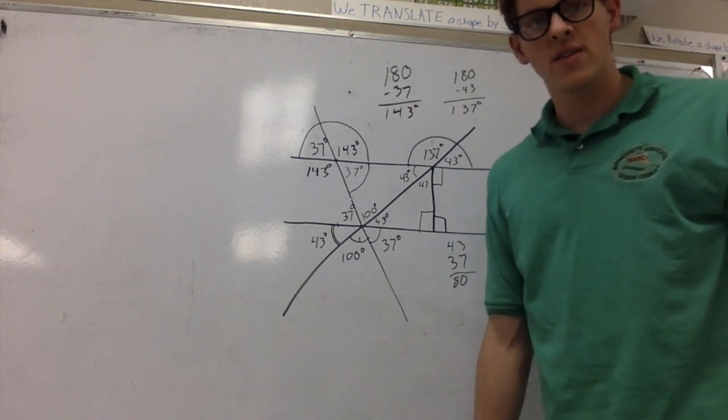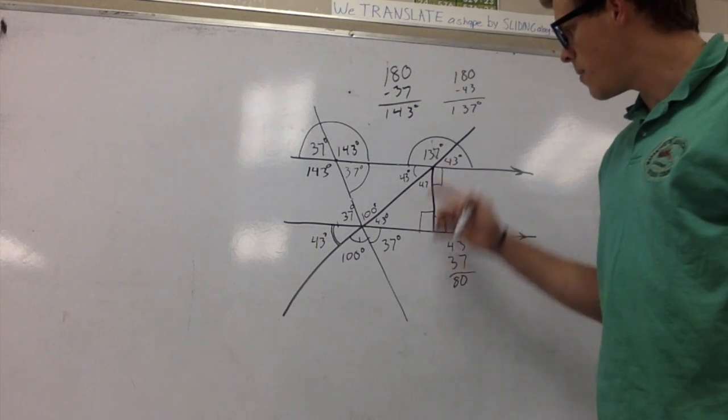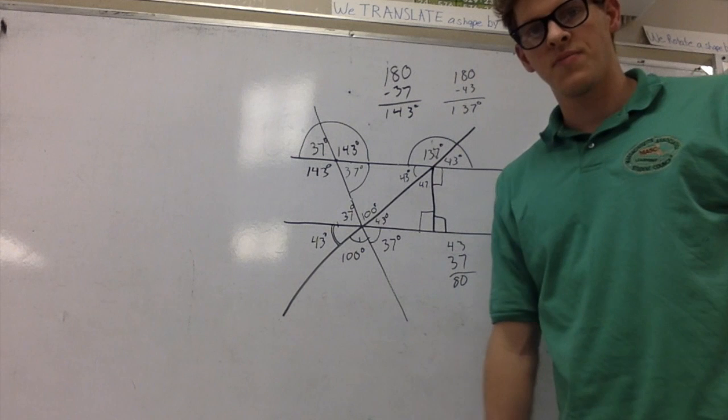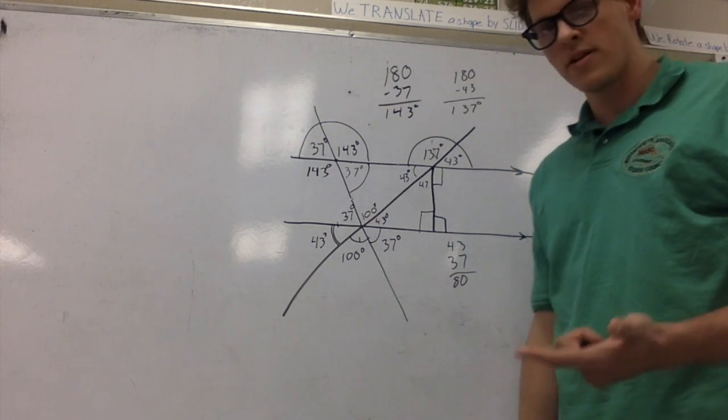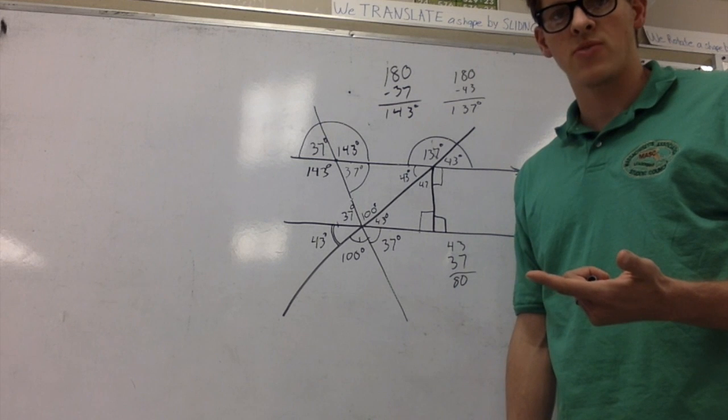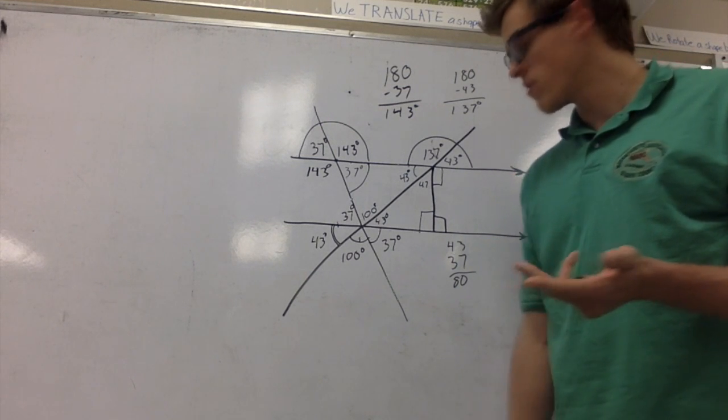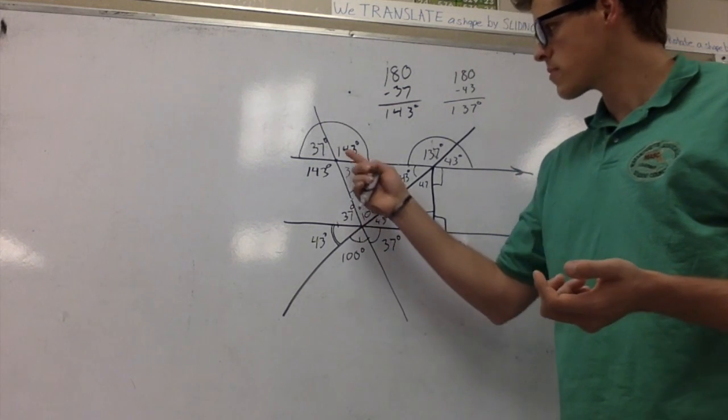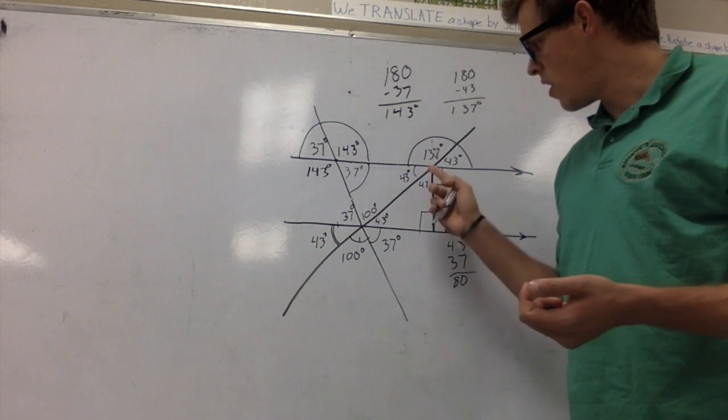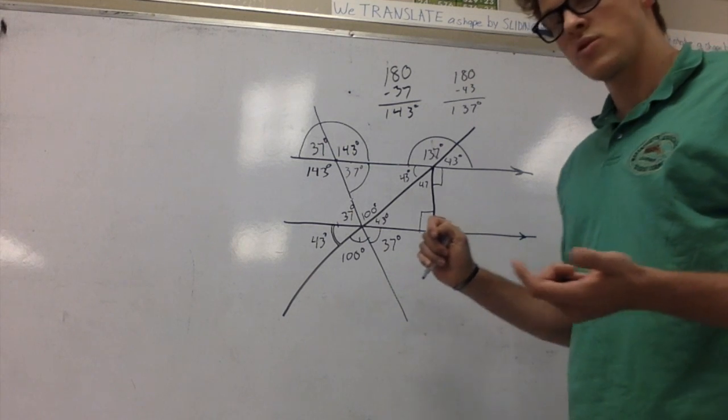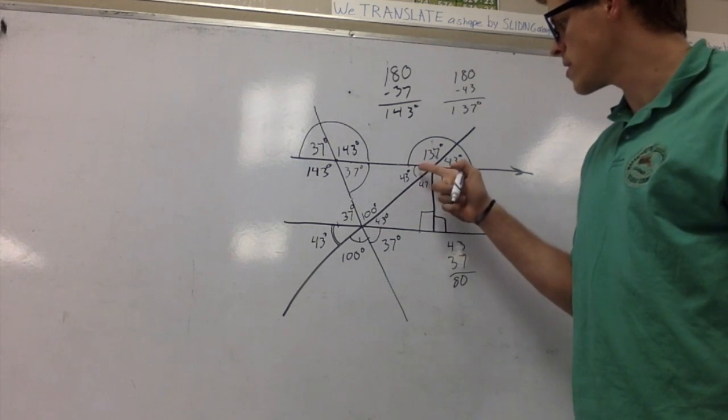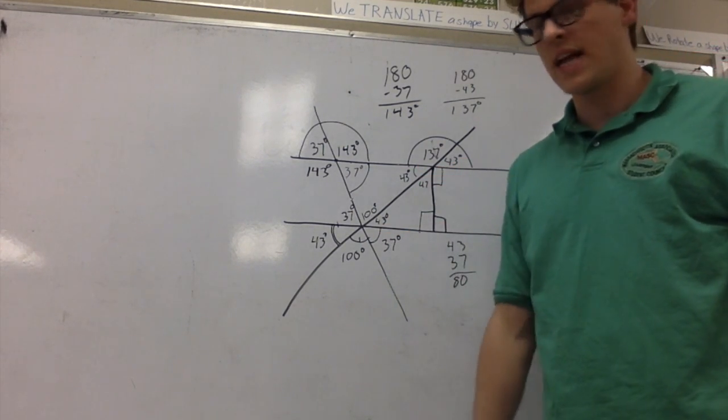This is two lines cut by a transversal, and then the second transversal turning into a triangle. We had to use supplementary angles, angles that add up to 180, congruent angle relationships such as vertical angles, alternate interior angles, and then we used complementary angles. For example, 43 and 47 add up to 90.